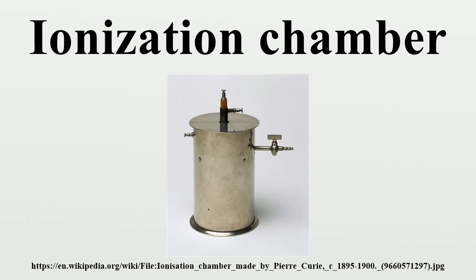There are two basic configurations: the integral unit with the chamber and electronics in the same case, and the two-piece instrument which has a separate ion chamber probe attached to the electronics module by a flexible cable. The chamber of the integral instrument is generally at the front of the case facing downwards, and for beta-gamma instruments there is a window in the bottom of the casing. This usually has a sliding shield which enables discrimination between gamma and beta radiation. The operator closes the shield to exclude beta and can thereby calculate the rate of each radiation type. Some handheld instruments generate audible clicks similar to that produced by a GM counter to assist operators in radiation survey and contamination checks. As the ion chamber works in current mode, not pulse mode, this is synthesized from the radiation rate.